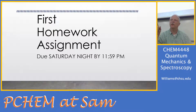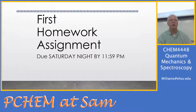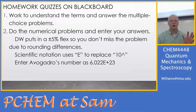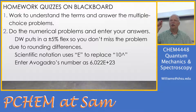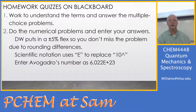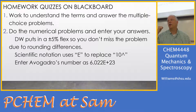We're going to have a PDF you can download with a homework quiz containing vocabulary and worked problems. You do all of that on your own, then go to Blackboard to enter your answers — some multiple choice, some numerical. For numerical answers I put in a plus-or-minus 5% range so you don't miss because we rounded differently. For scientific notation, use E to replace '10 to the' — for example, Avogadro's number would be entered as 6.022E+23.